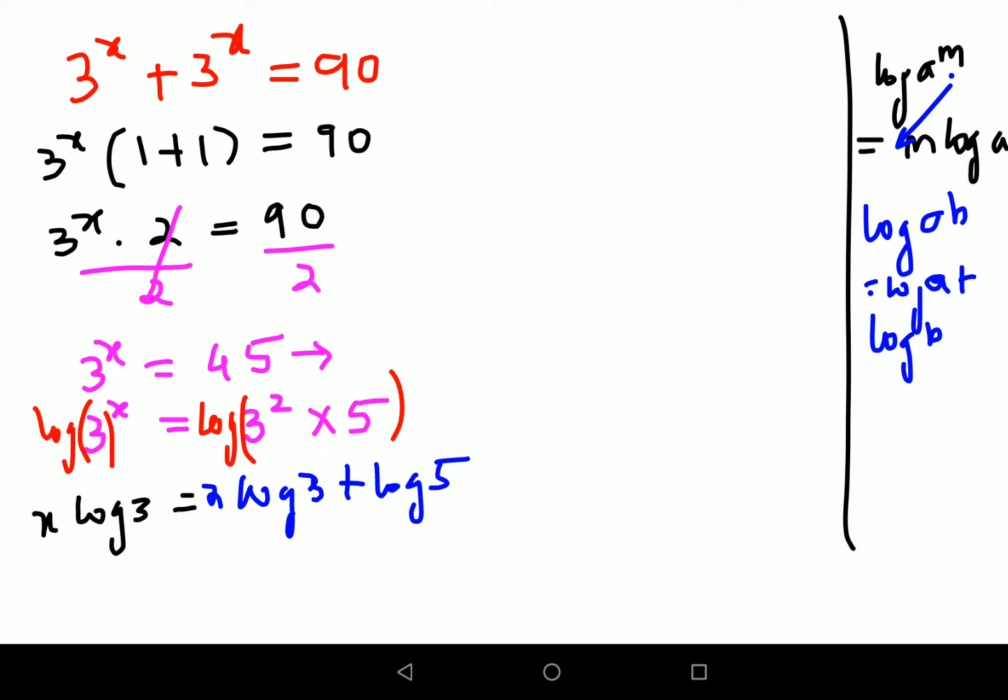Now in order to find the value of x, I will divide both sides by log 3. Please understand, here this can get cancelled. But this and this cannot get cancelled because there is a plus sign involved.